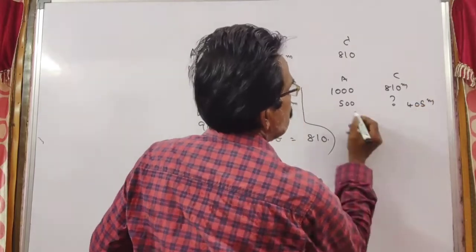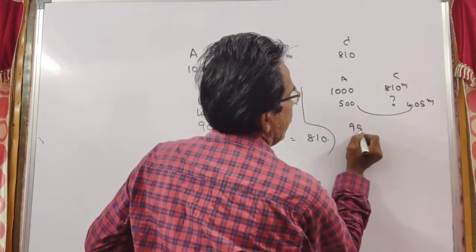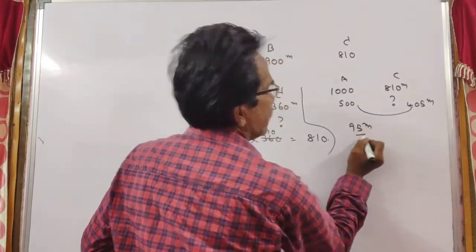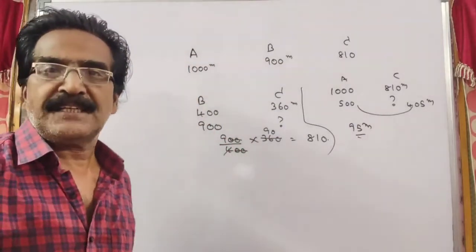So A can beat C by 95 meters. Okay friends, thank you. Have a nice day.